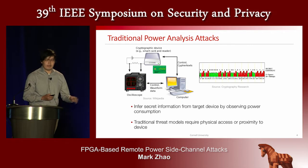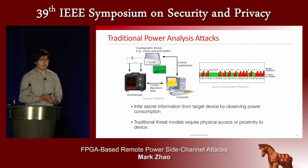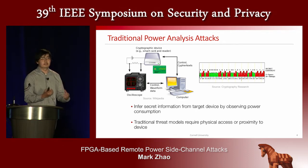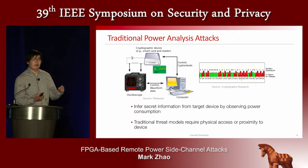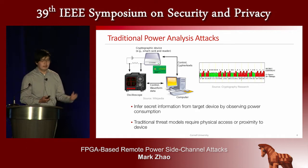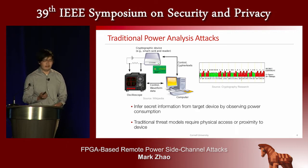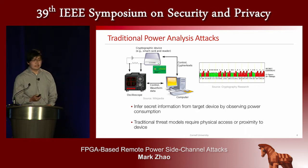As background on power analysis attacks: a traditional power analysis attack works like the figure on the left, where an attacker is assumed to have full physical control over the target device. The attacker measures power consumption using a lab bench oscilloscope, which gives a trace as shown on the right. Using this power trace, the attacker can infer confidential information that the device is processing.